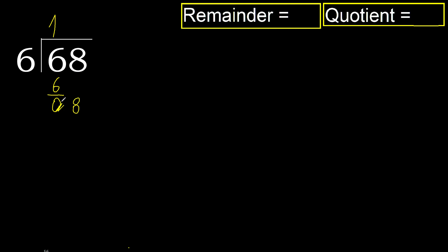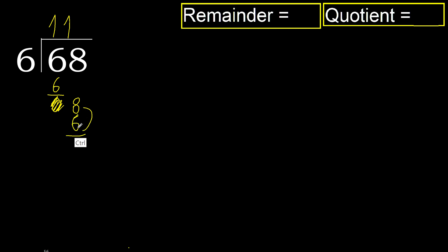Eliminate the 0 on this side. Bring down 8. 6 multiplied by 1 is 6 — it's not greater. Subtract, remainder is 2.